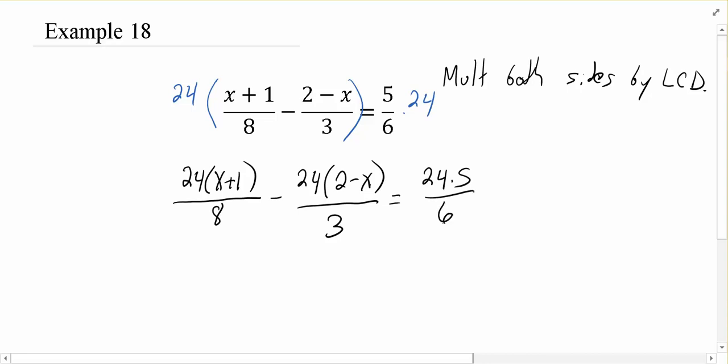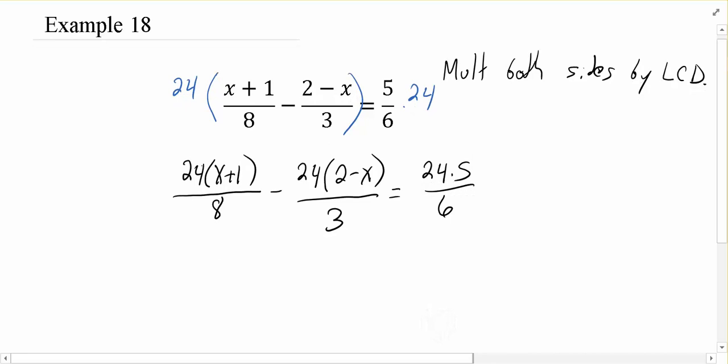Then we can worry about the division part. So then we can say 24 divided by 8 is 3. 24 divided by 3 is 8. And 24 divided by 6 is 4.